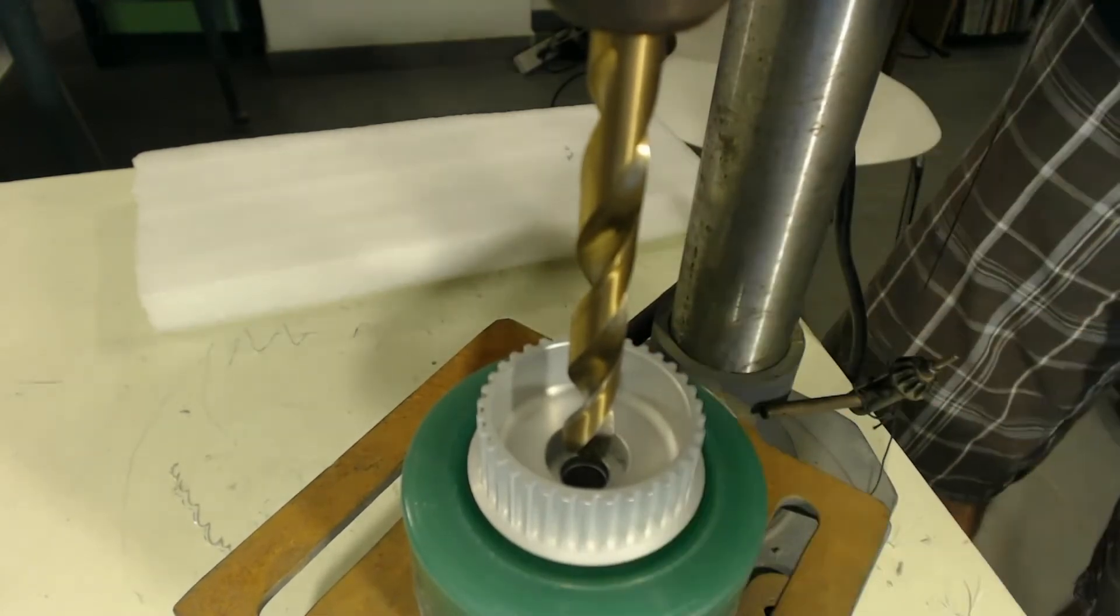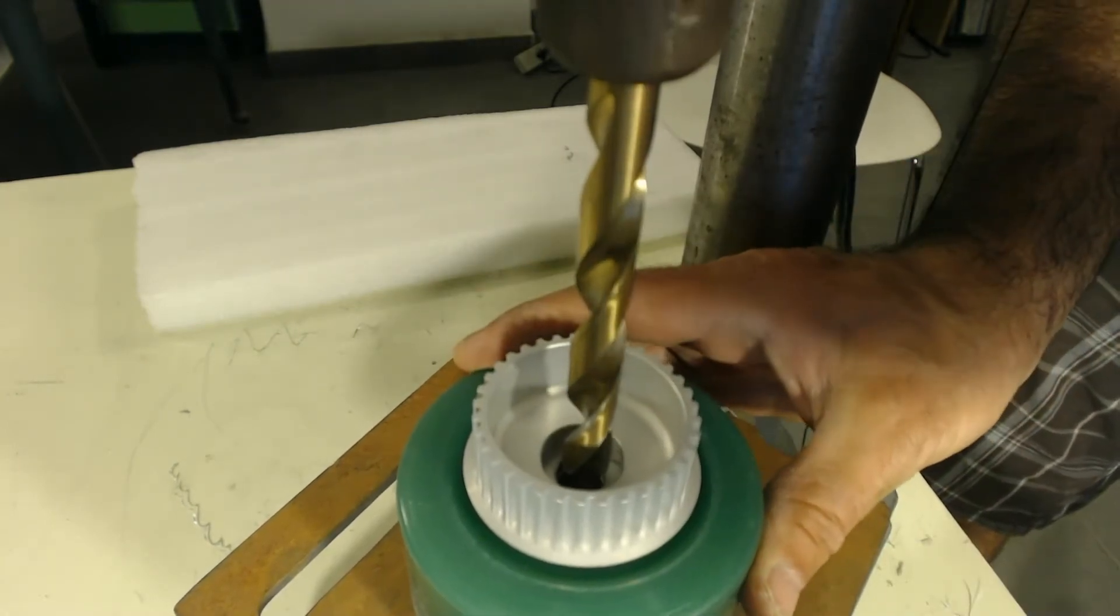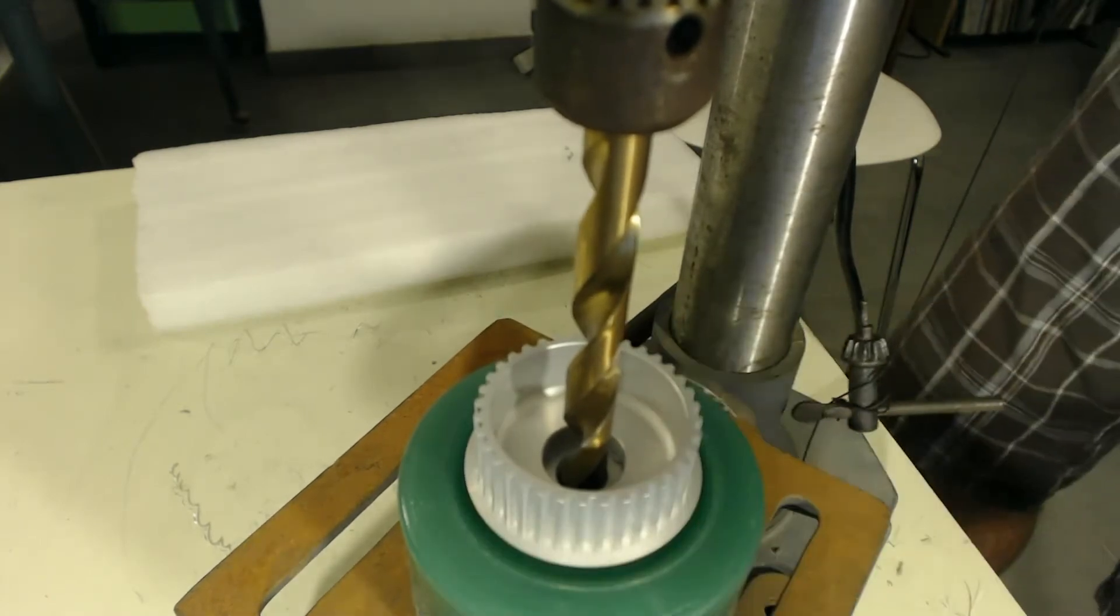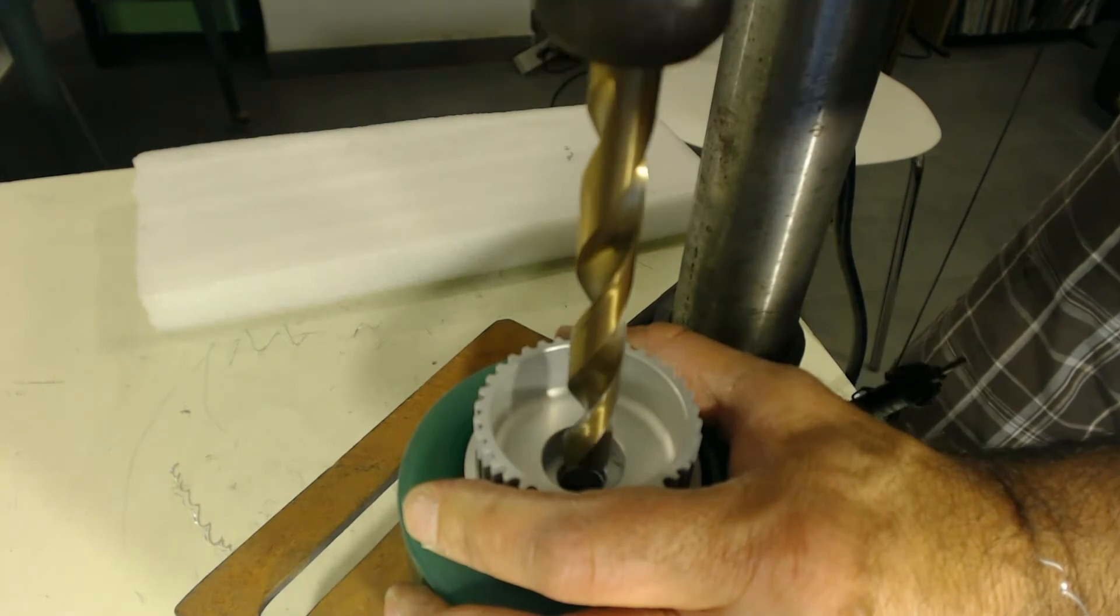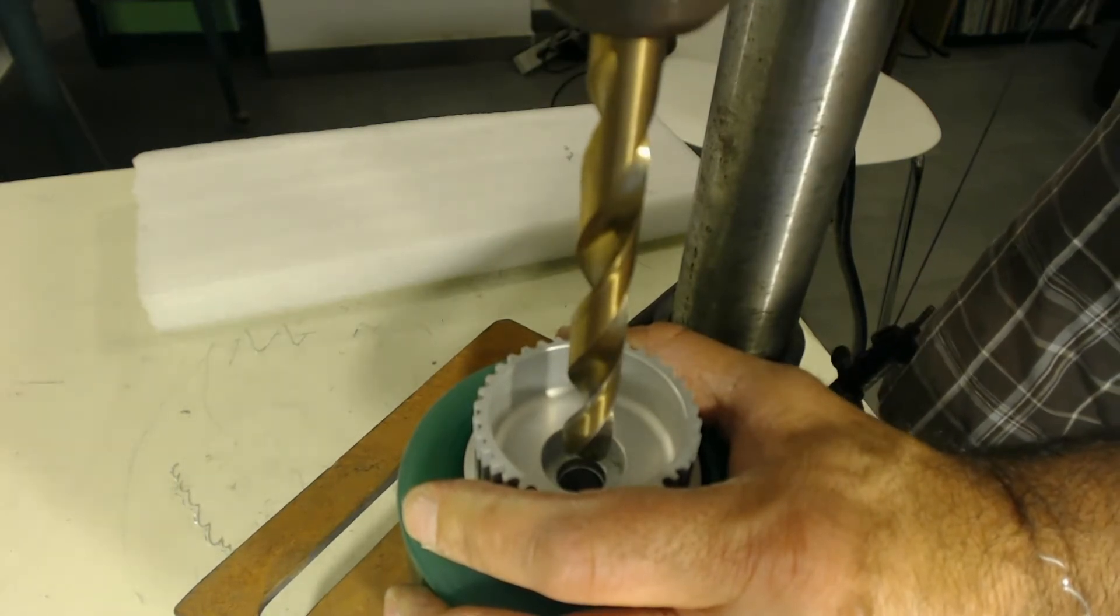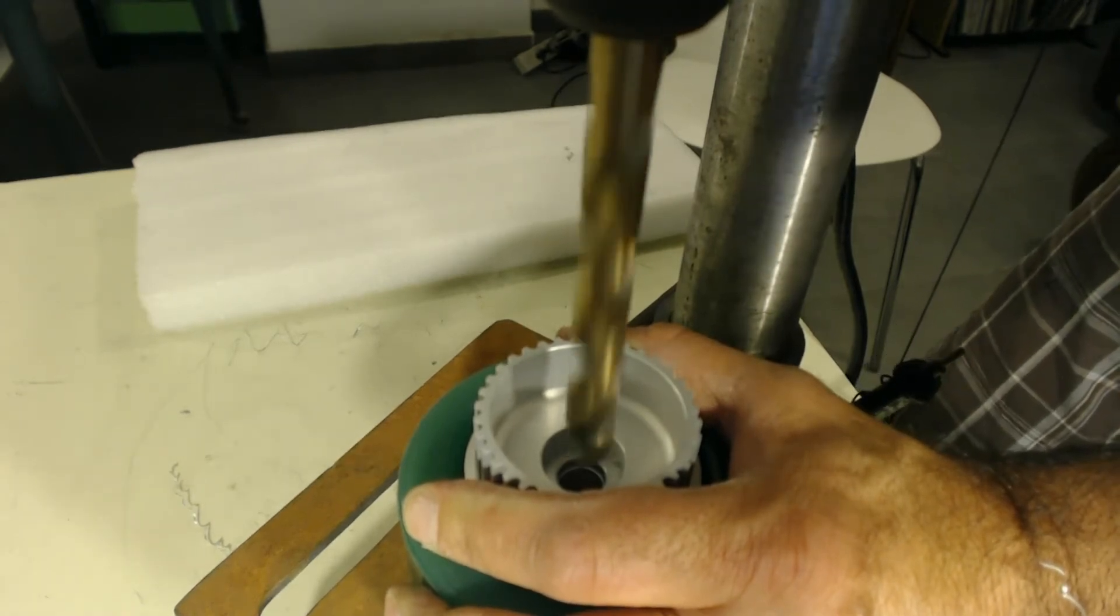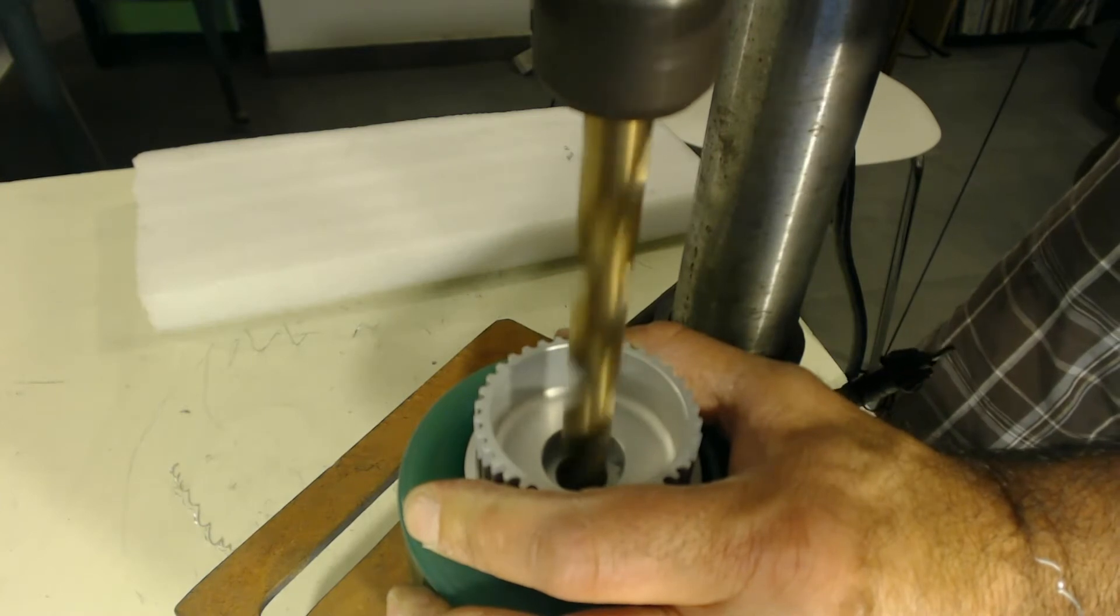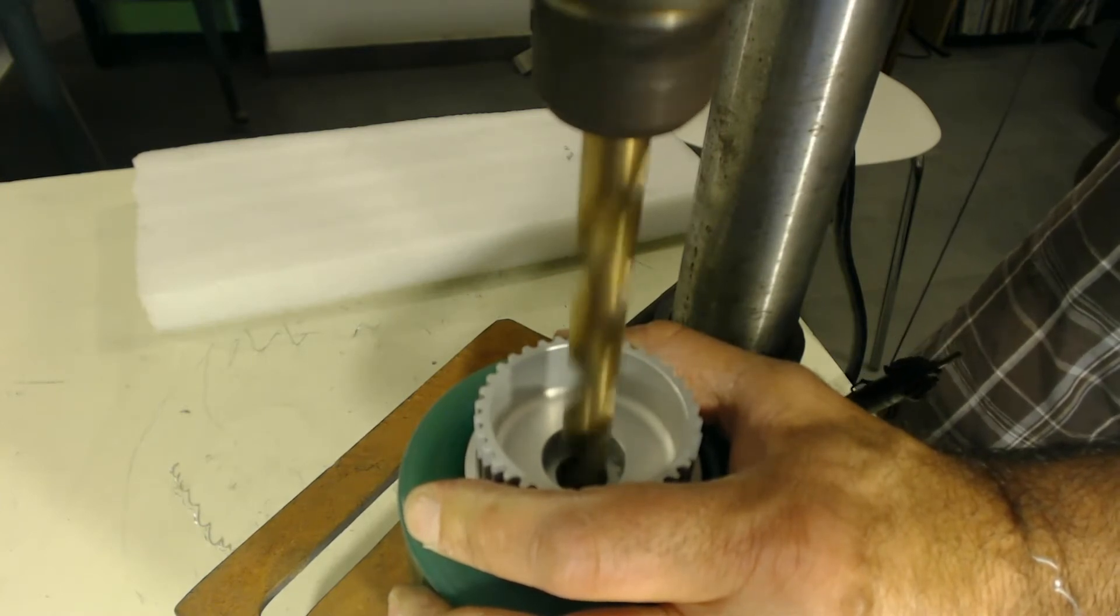So again, we want to kind of find our center first before you turn the drill on. There we go. So now that we're locked in the right position, go ahead and firmly grab the wheel and let the handle back off of the drill press. And we're going to turn it on nice and steady. Again, don't rush the process. Go nice and slow. You don't want this thing binding around you.